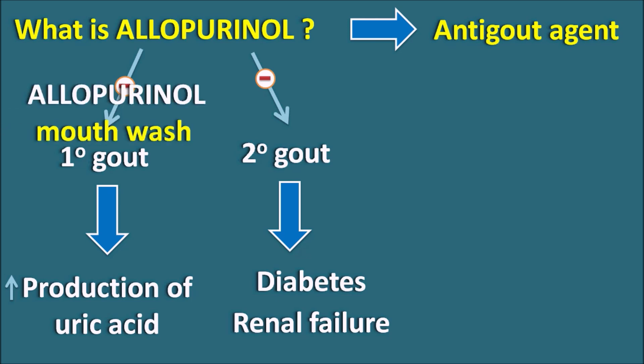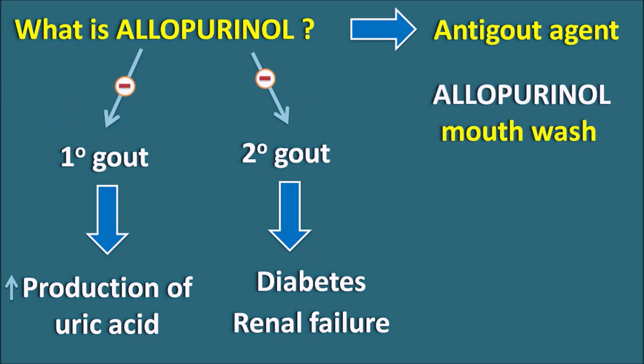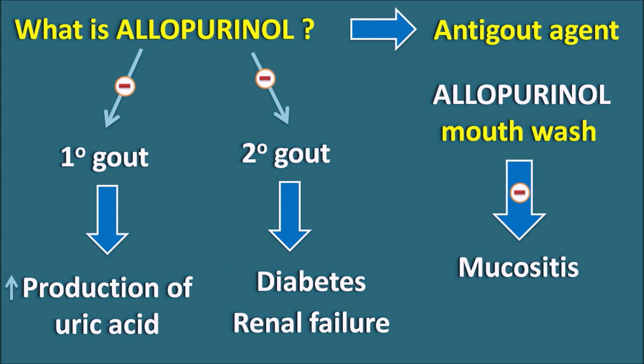Similarly, allopurinol can also be used as a mouthwash. When allopurinol mouthwash is used, this drug can control the mucositis produced by excessive production of purines. Many times allopurinol can be combined with anti-cancer agents in order to control mucositis. For example, 5-fluorouracil is a drug which acts as an anti-metabolite and can produce mucositis as one of its important side effects. So in such conditions, allopurinol mouthwash can be given in order to control the mucositis.